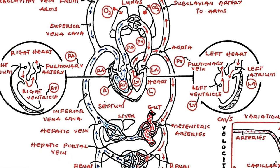If the output of right heart were greater than the input to the left heart, then blood would be piling up continuously in the lungs. Conversely, if the right heart output were less than the input to the left heart, then blood would drain from the lungs.